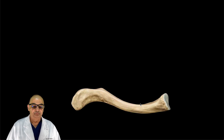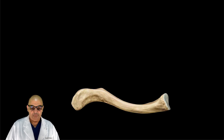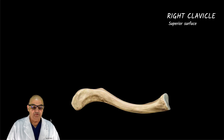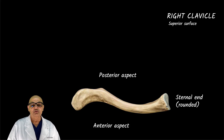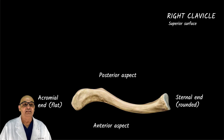Let's look at a disarticulated right-sided clavicle bone and its salient features. Looking at its two ends, we can see very clearly that one end is rounded and the other end is flat. We are looking at it from the superior surface. This is the anterior aspect and that's the posterior aspect. The rounded end goes towards the sternum and the flat end goes towards the acromial process of the scapula.